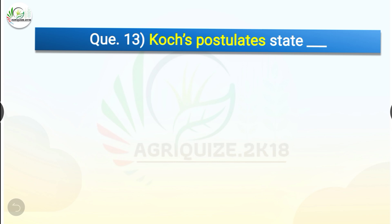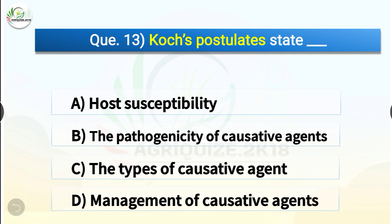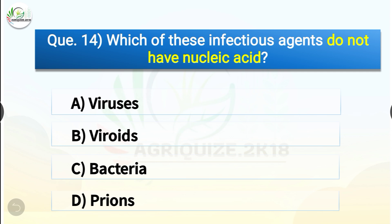Question number thirteen: Koch's postulate states dash. The options are host susceptibility, the pathogenicity of causative agents, the types of causative agent, or management of causative agents. The correct answer is option B, the pathogenicity of causative agents. Koch's postulate states the pathogenicity of causative agents.